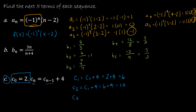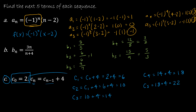And then c sub 3 would be 10 plus 4, or 14. C sub 4 would be 14 plus 4, which is 18. And c sub 5 would be 18 plus 4, or 22. So that's how we use a recursive definition — it's using the value before.